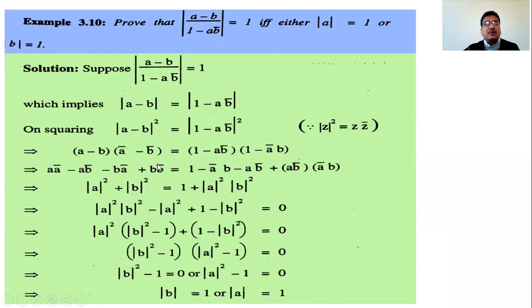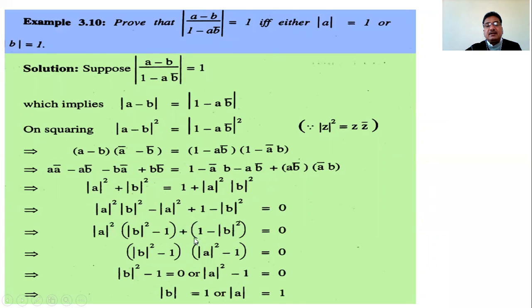Expanding both sides: left side gives |a|² - ab̄ - bā + |b|², and right side gives 1 - ab̄ - āb + |a|²|b|². The terms -ab̄ and -āb cancel from both sides. Rearranging: |a|² - |a|²|b|² + |b|² - 1 = 0, which factors as |a|²(1 - |b|²) - (1 - |b|²) = 0.